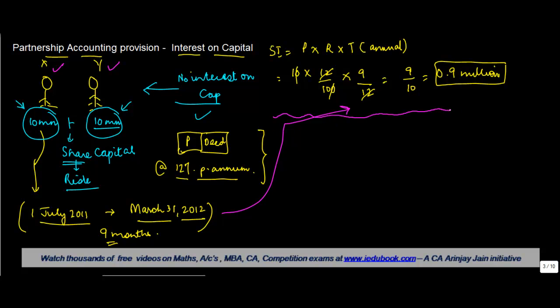Having said this, now what is the entry which the business is going to make for such interest on capital? From a business perspective, this interest on capital is an expense. And if it is an expense, then obviously you need to debit it. So you debit Interest on Capital account.